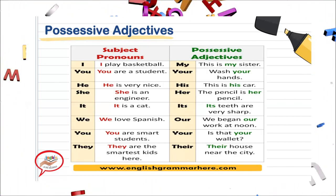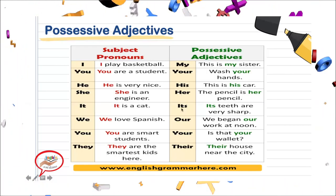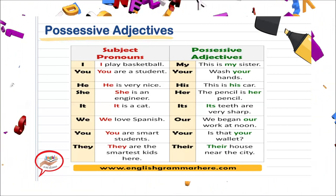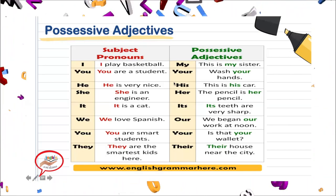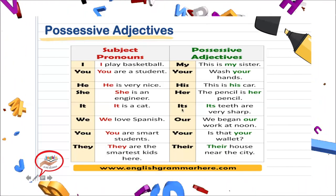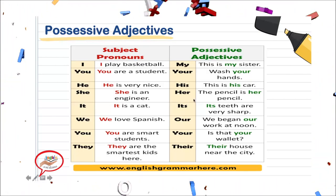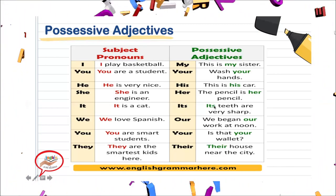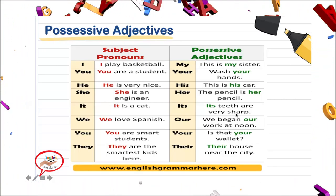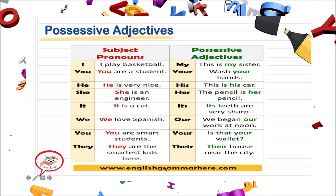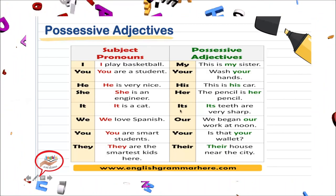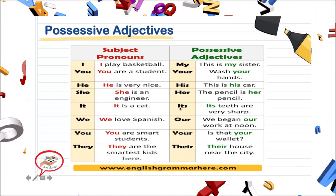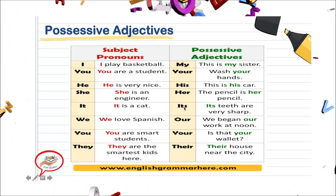Next one. Ojo con pronunciación. Nuestro subject pronoun es it, termina con una t. Ahora, si nosotros queremos hablar de un possessive adjective, vamos a decir it's. It's teeth are very sharp — sus dientes son bien filosos. It's va a ser referencia para sus. Como pueden ver, his, her, it's tienen el mismo significado: su, sus.